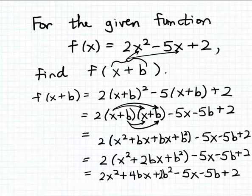So this is actually our final result, so we get kind of a lengthy expression for our final answer here. 2x squared plus 4bx plus 2b squared minus 5x minus 5b plus 2.